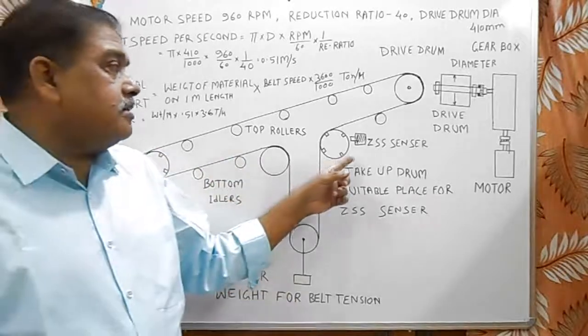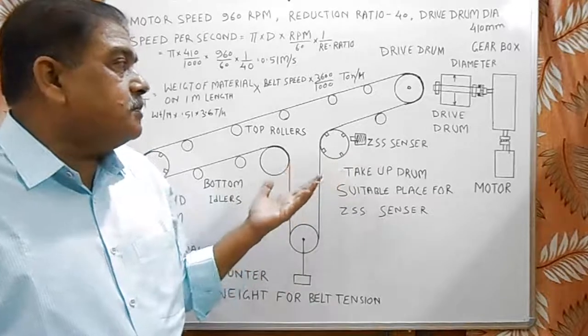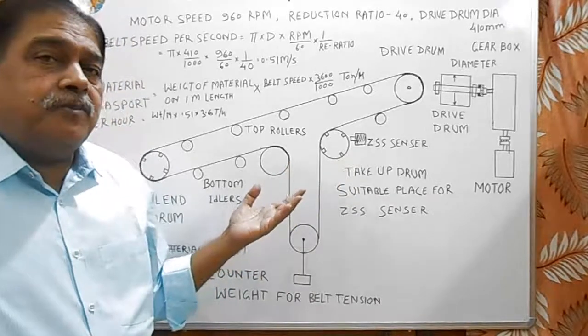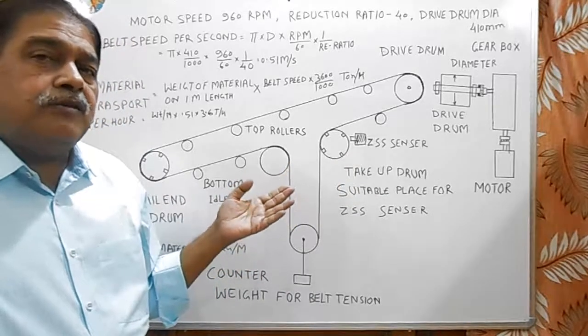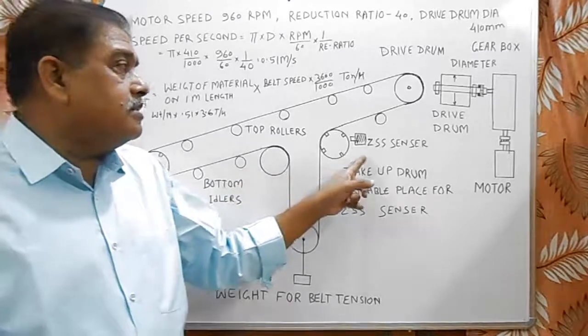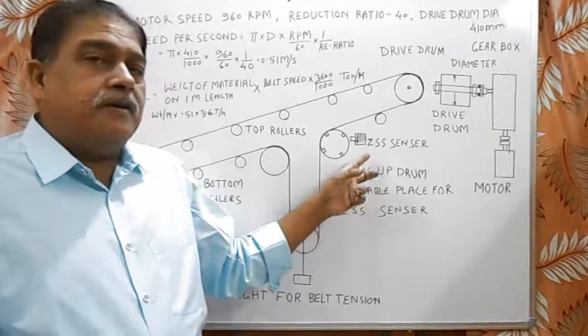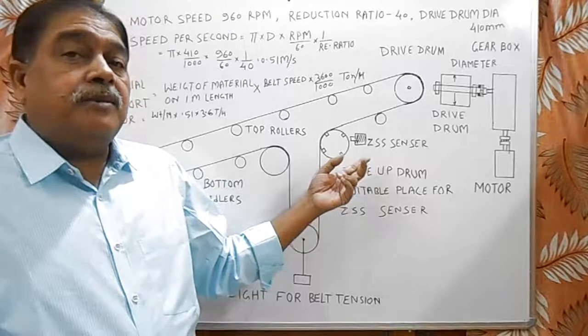And this ZSS is used to sense speed of belt. Whenever the speed of belt decreases below 75 percent of speed, this ZSS gives a signal that belt speed is slow or belt is snapped out.